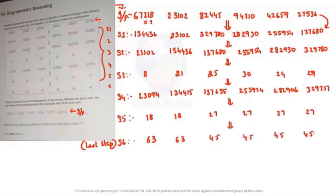From input to step one, there are some multiplications happening. The first number is multiplied by two, giving 1,34,436. The second number remains the same, multiplied by one. The third number is multiplied by four, giving 3,29,780. When you multiply, 9 threes are 27, so it must be a multiple of 3 — 3 into 1 is 3.